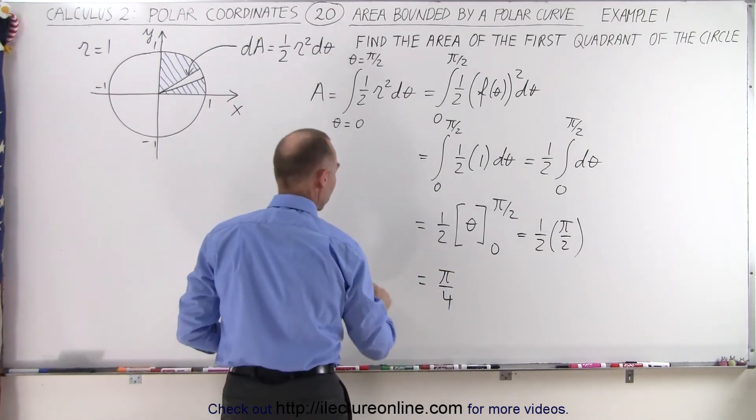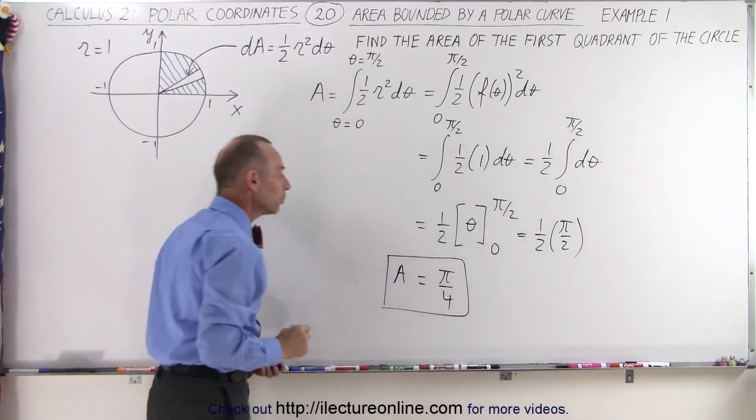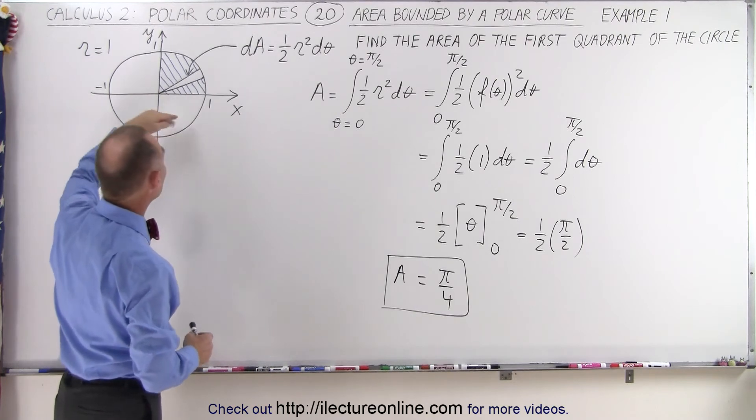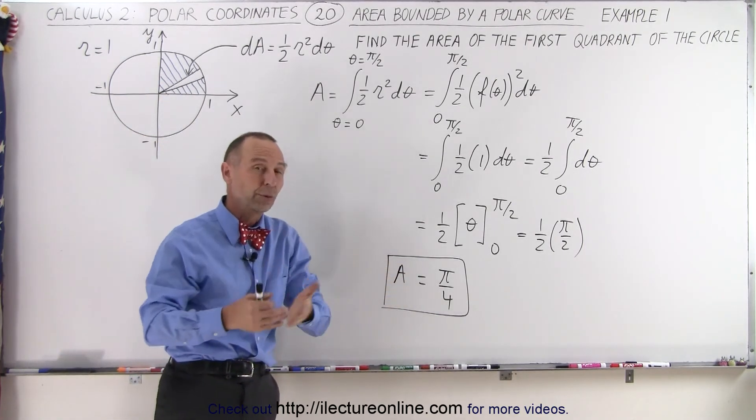That would be equal to the area, so the area will be π/4 for just the first quadrant. If you want the area of the whole circle, that would be 4 times as much, so the area for the whole circle will be equal to π.